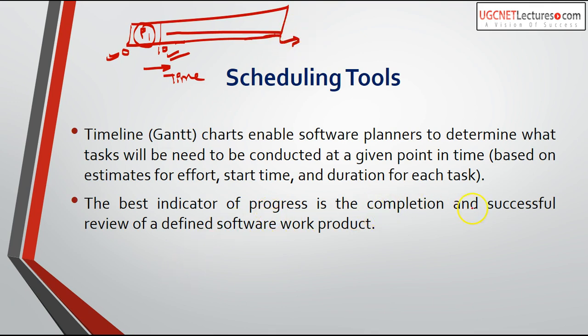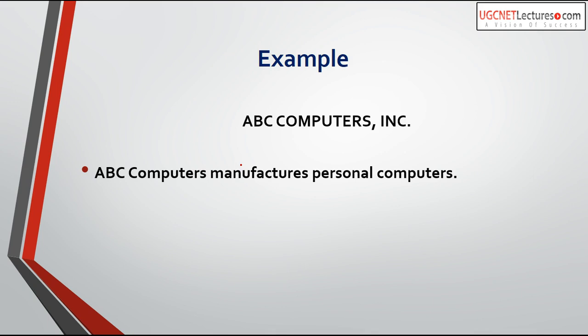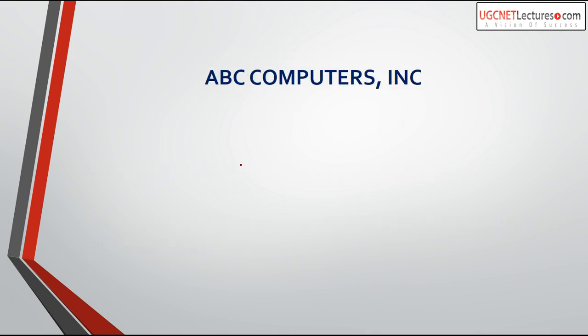Now we will see an example of these tools — how we can use them to schedule a particular project. The example is of a company called ABC Computers, which manufactures personal computers. We will see from the start how to schedule the tasks. ABC Computers needs to design, manufacture, and market the ABC Palm 2000 and Palm Book computers. There are three major tasks: manufacture the new computer, train staff and vendor representatives, and advertise the new computers.